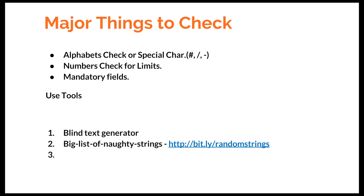You can also use a Blind Text Editor — just Google it — which gives you a list of strings you can enter into input fields. The second useful resource is the Big List of Naughty Strings. Go to the link bit.ly/randomstring — it provides around 200 to 300 strings that you can use to check your input text fields. These strings are known to cause failures and will help you generate test cases.